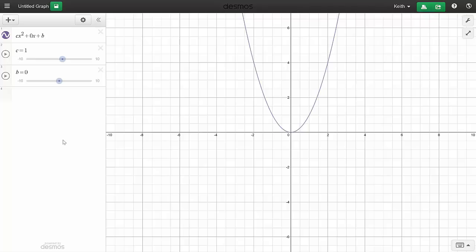Because c is positive, this gives us a parabola that opens at the top. And because the second term 0t is 0, the parabola will be centered on the y-axis like so. And with b at 0, the bottom of the parabola will rest on the x-axis.